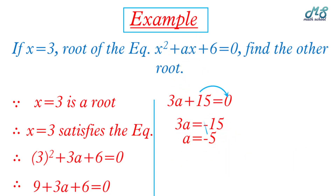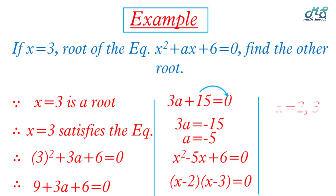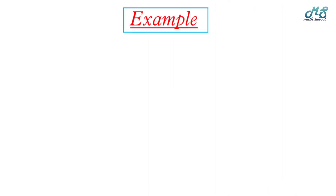Substituting a equals negative 5 into the equation gives x squared minus 5x plus 6 equals zero. Factorizing: we need two numbers with product 6 and sum 5 with the same sign as the middle term (negative), so x minus 2 times x minus 3 equals zero. We get x equals 2 and x equals 3. Since x equals 3 was given, the other root is x equals 2.